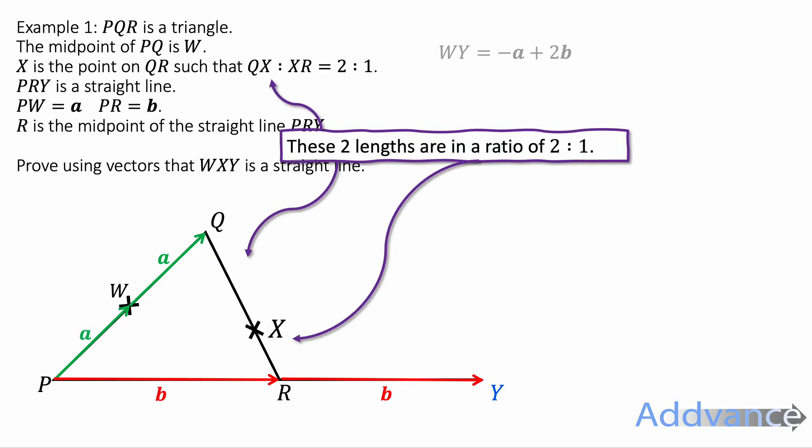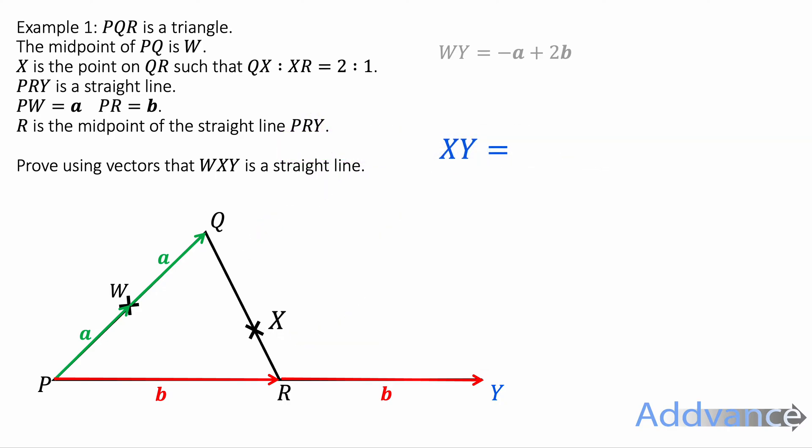Now X to Y we're going to try and piece together what the vector X to Y is. And we'll start by realising that the ratio of 2 to 1 tells us that it's a third to two thirds. So the length from X to R is a third and from X to Q is two thirds. That's a third of QR and two thirds of QR.